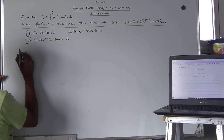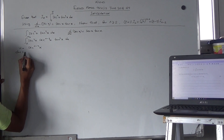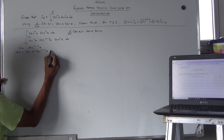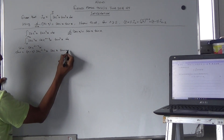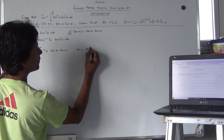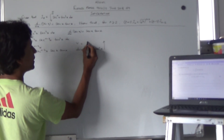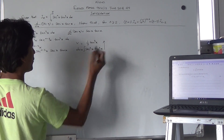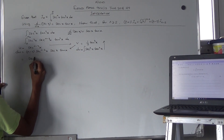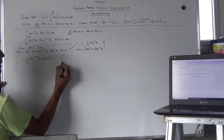Now, where can we go from here? We use integration by parts. Let u = sec^(n−2)x, then du = (n−2)·sec^(n−3)x · sec x·tan x dx using the chain rule. For dv, we have sec²x, and integrating gives v = (1/3)tan³x from part one.